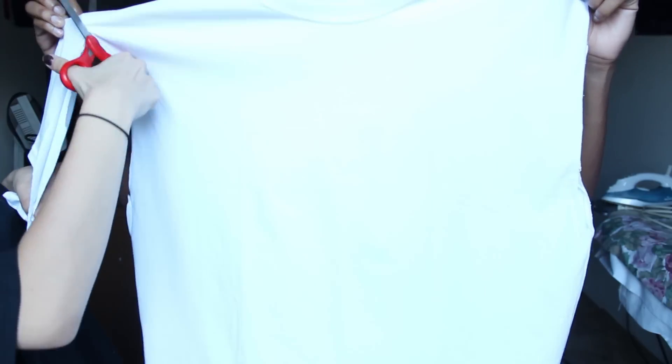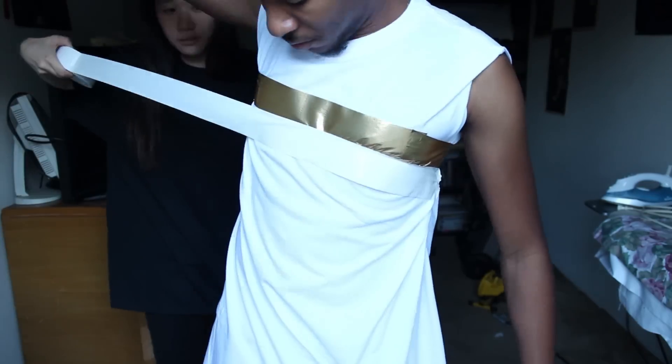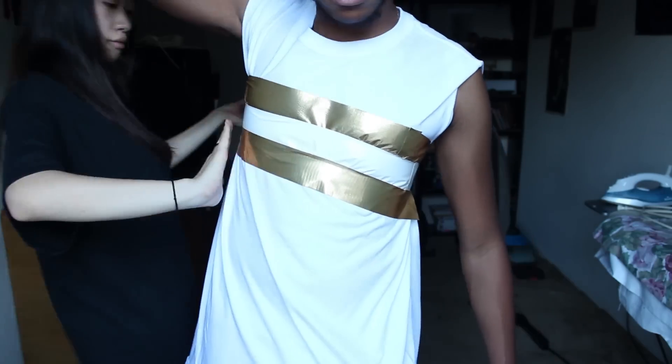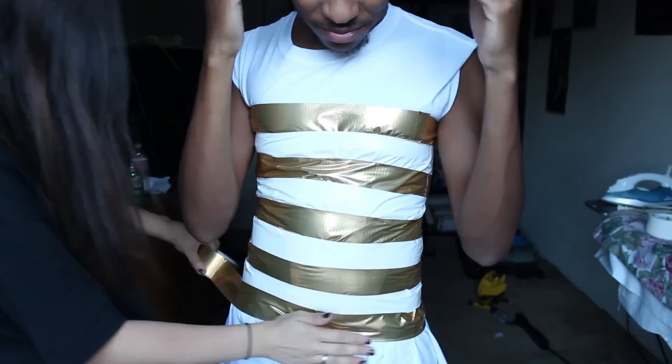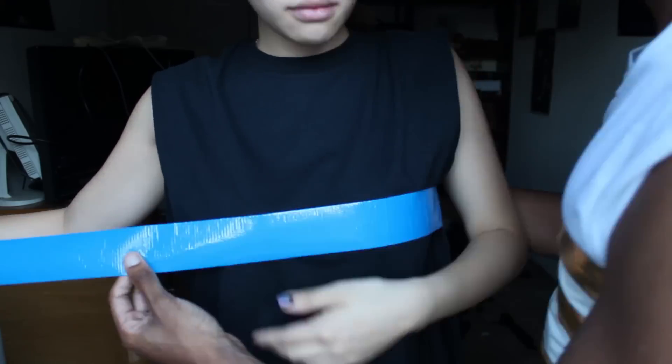So first you're going to cut the edges of the shirt and then you're going to tuck them in. Now this part is pretty much self-explanatory. You're just going to alternate the gold and the white all the way down the t-shirt so it could look like a dress. Next you're just going to repeat the steps for the black and blue dress.